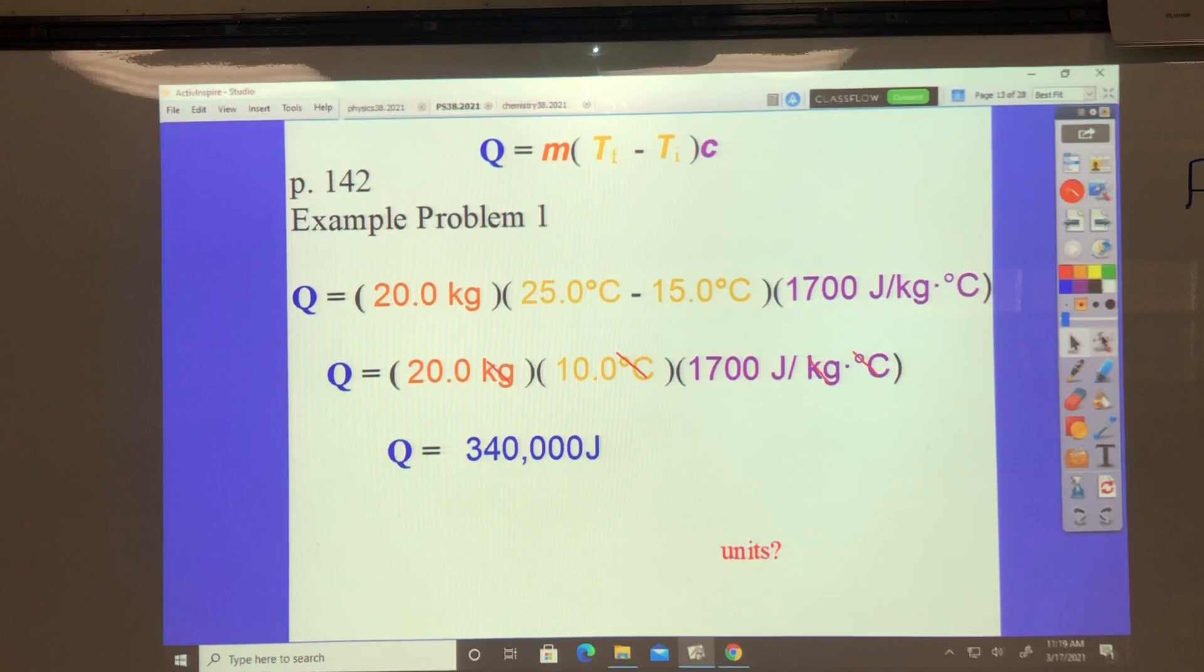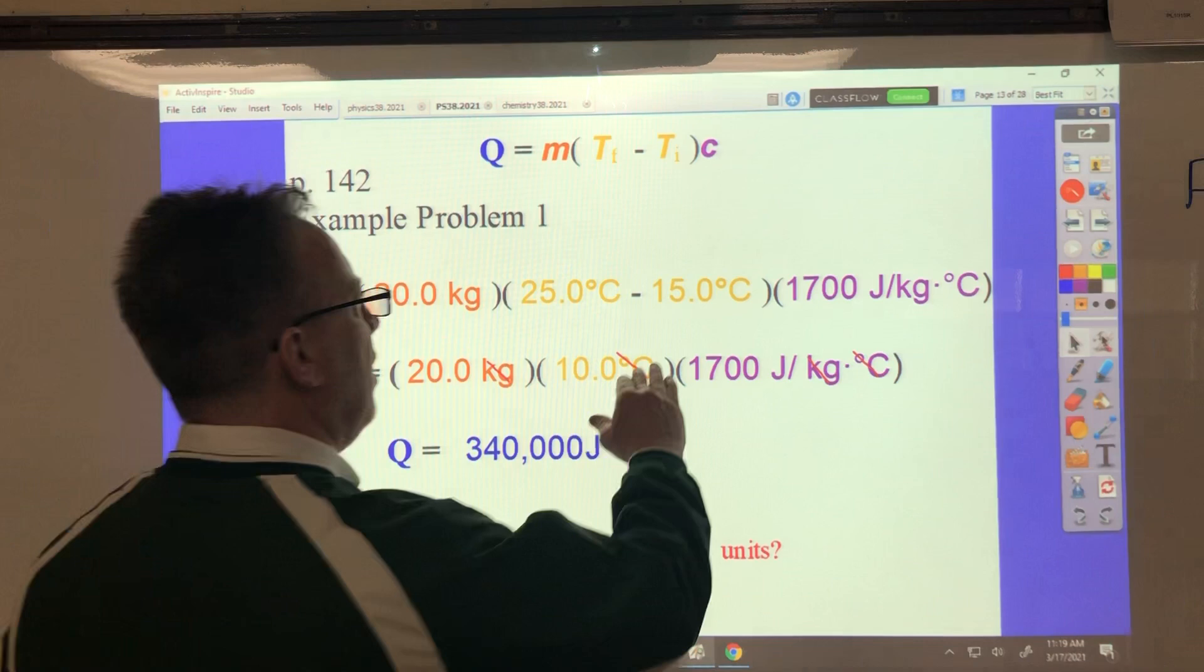we did in classes where we had 20 kilograms and I think it was iron was 1700 joules times kilograms. Joules over kilograms times meters per second. Okay, find the right chapter here.